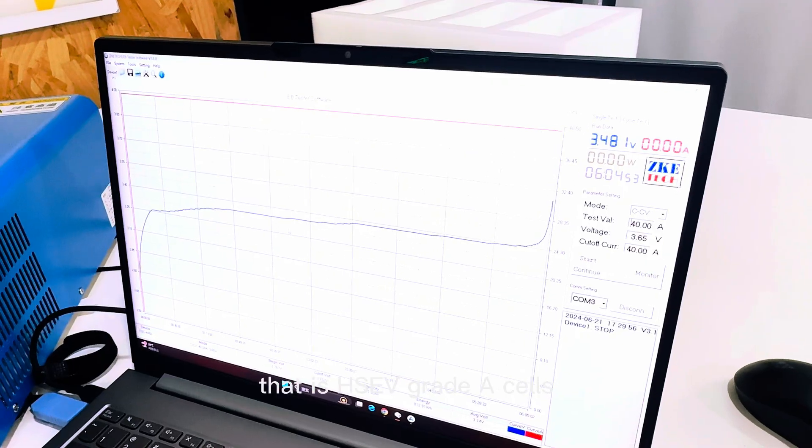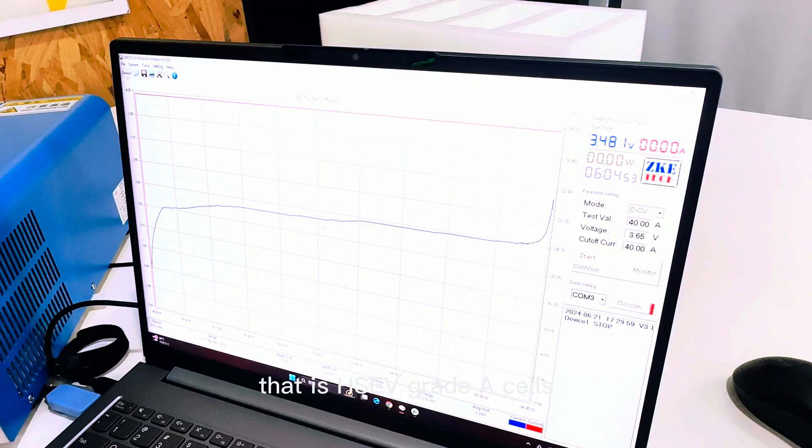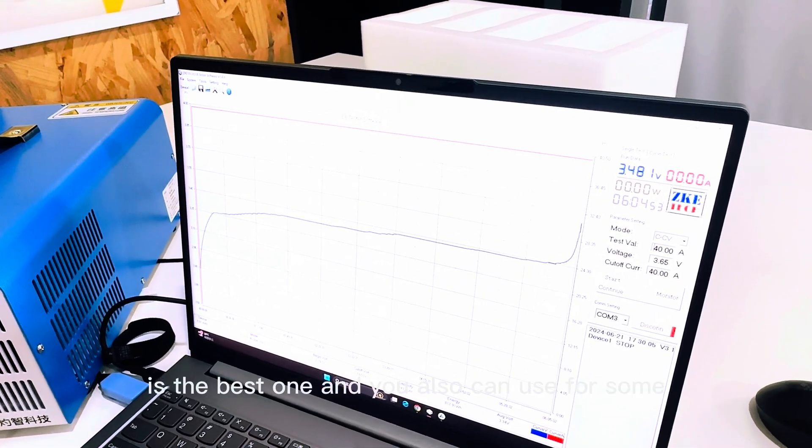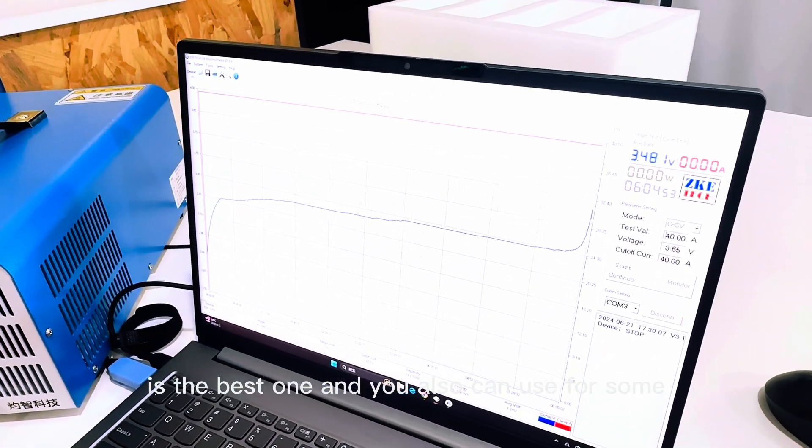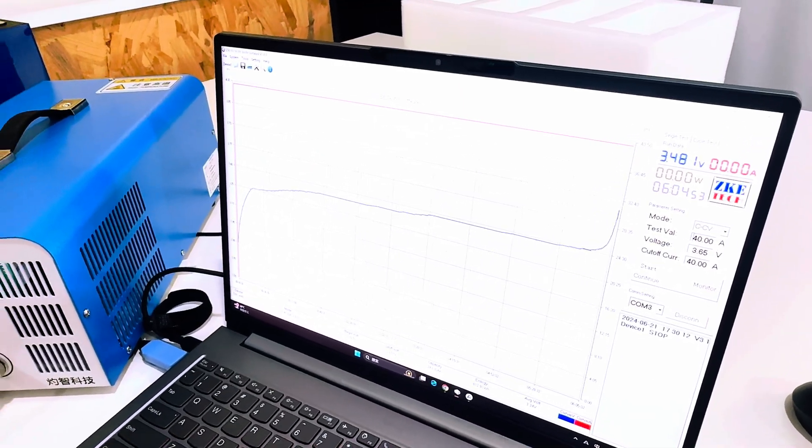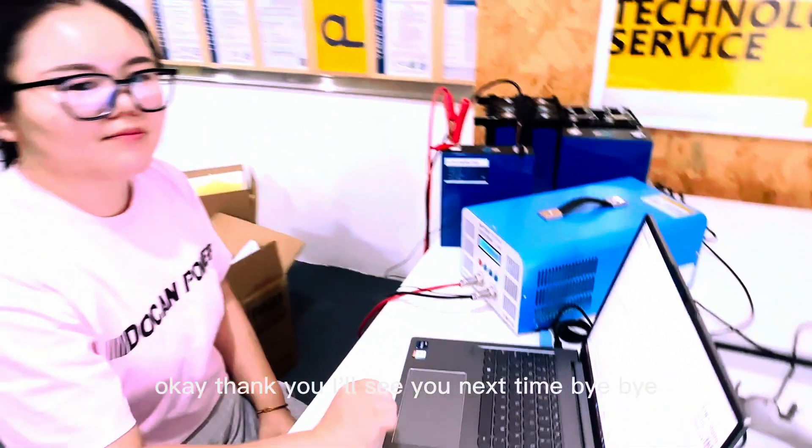It's EV Grade A cells. For golf carts, it's the best one. And you also can use it for high-speed vehicles and home storage. Thank you and see you next time. Bye bye.